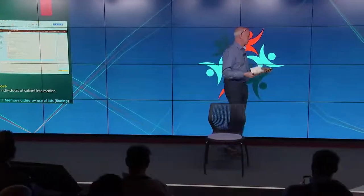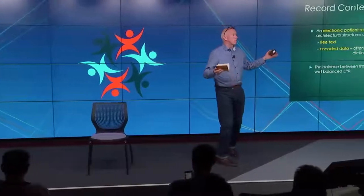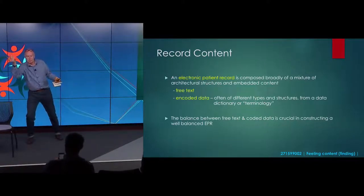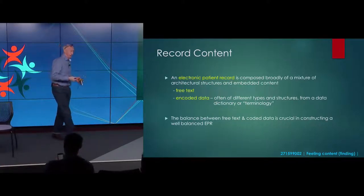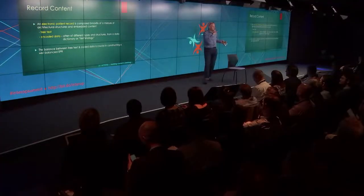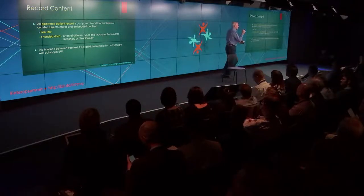It's also a form of communication over time and between individuals of the salient, relevant information needed to deliver care. The record content is composed broadly of a mixture of architectural structures that present the content and its embedded content, which may be free text or encoded data. For those thinking about how to use EPRs for the first time, that balance of free text versus encoded data is quite interesting, and to produce a proper, well-balanced EPR you have to use both. Certainly if you're working in psychiatry or psychology, there's going to be a lot more free text.